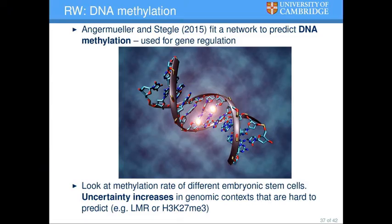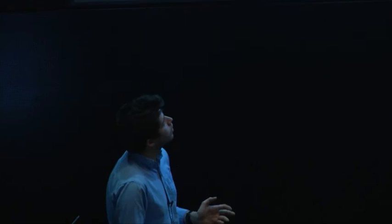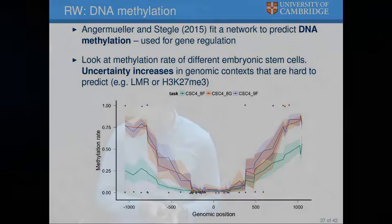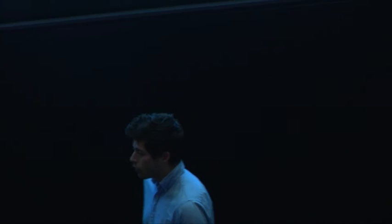One last application is in bioinformatics — DNA methylation. Engel, Mueller, and Stegel took a network and tried to predict DNA methylation, where small molecules sitting on the DNA regulate what genes are turned on or off. They found that uncertainty increases in genomic contexts that are harder to predict. This goes back to our physician example: a physician would get information that the model is not certain about this prediction, so I'll take that into account when I make my decision. Or the model is very certain, so I'll make the decision with higher confidence.